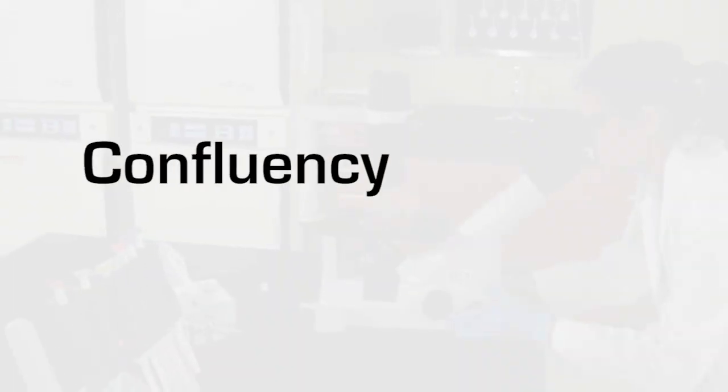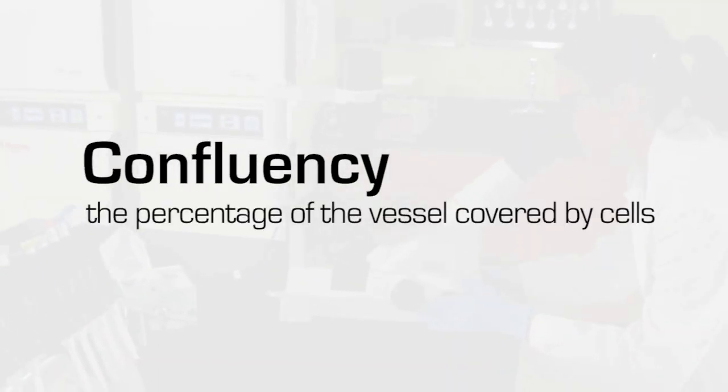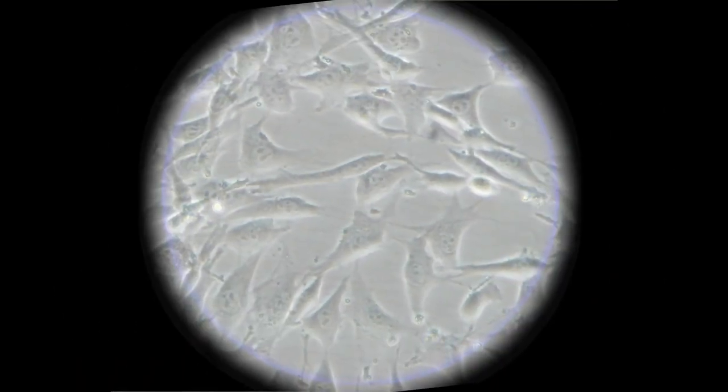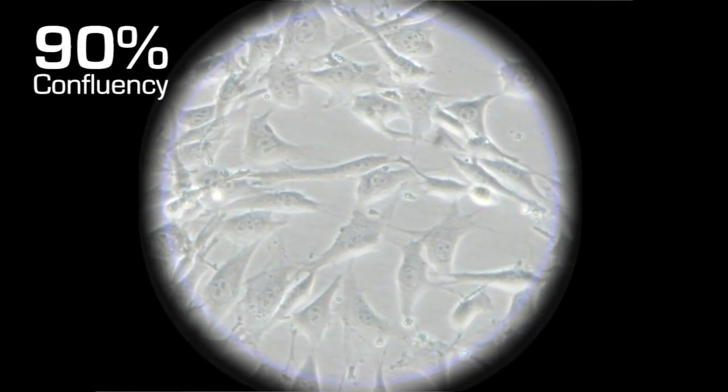Next, calculate the percent confluency. Confluency is the percentage of the vessel covered by cells. Our cells are at about 90% confluency.